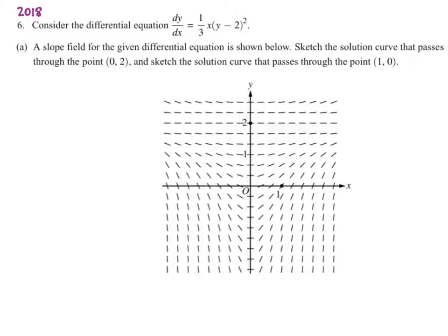But in this case, it says sketch the solution curve that passes through the points (0, 2), and the solution curve that passes through the points (1, 0). So we're just kind of sketching a curve that is going to pass through this point and follow the slope field. So (0, 2) is this point right here, and we need to graph a curve that follows the slope field around it.